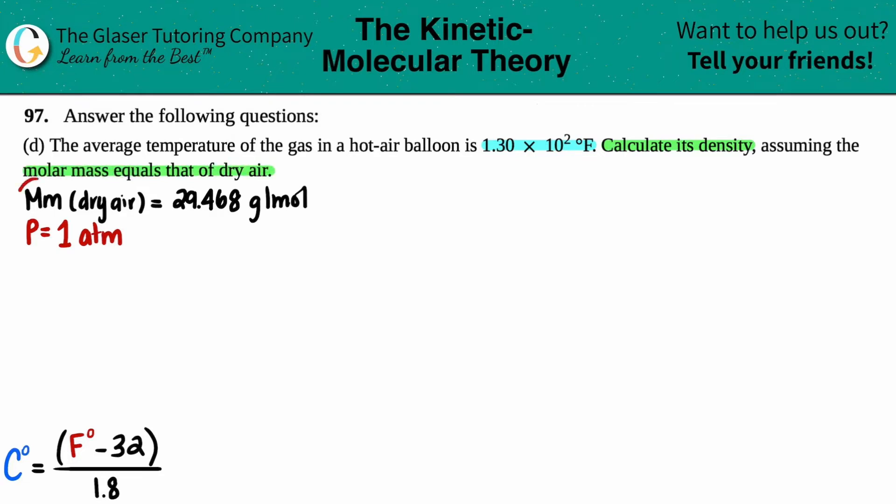So we found out the molar mass, which is mm of dry air, in part C. That was equal to 29.468 grams per mole. Now in part A of this question, on 97A, we also discussed that the pressure of the hot air balloon is the same as the pressure of the atmosphere. So in letter C they did tell us that we had a pressure of 1 atm, but since the hot air balloon is at the same pressure as the atmosphere, I could also take that piece of information. Okay, so let's now keep going.